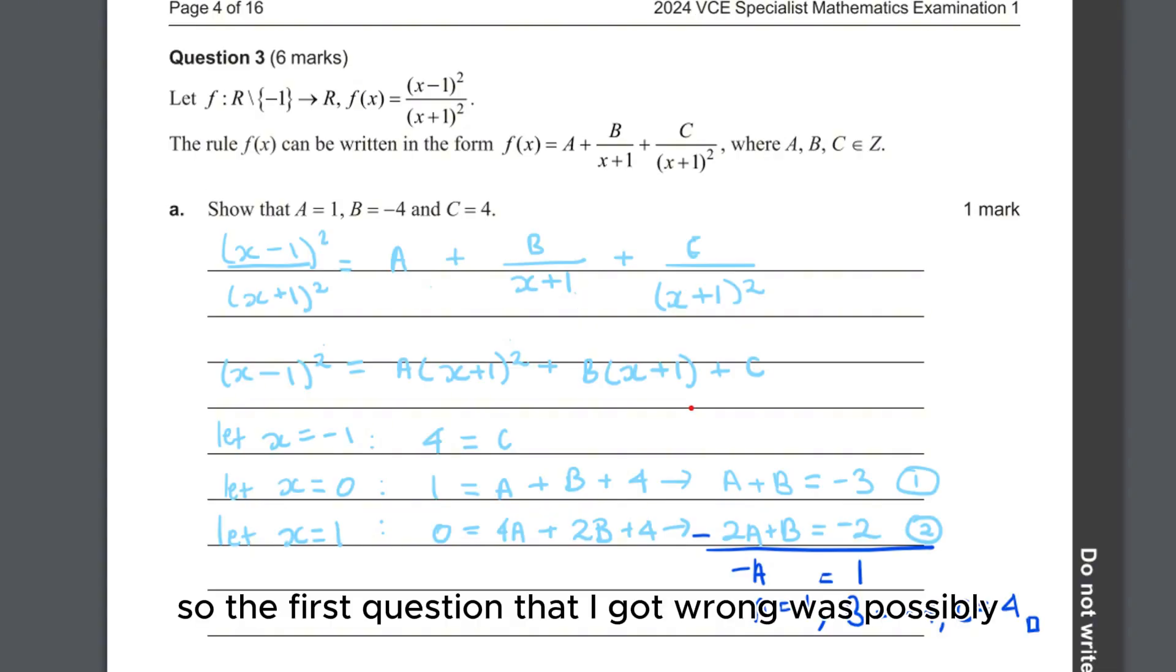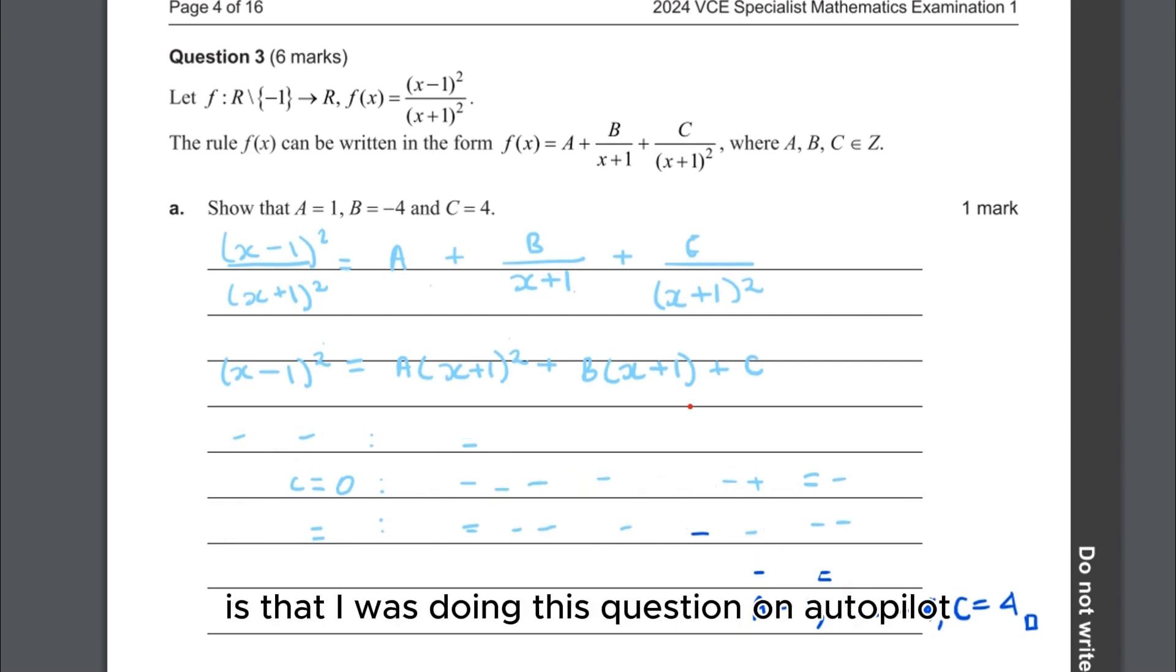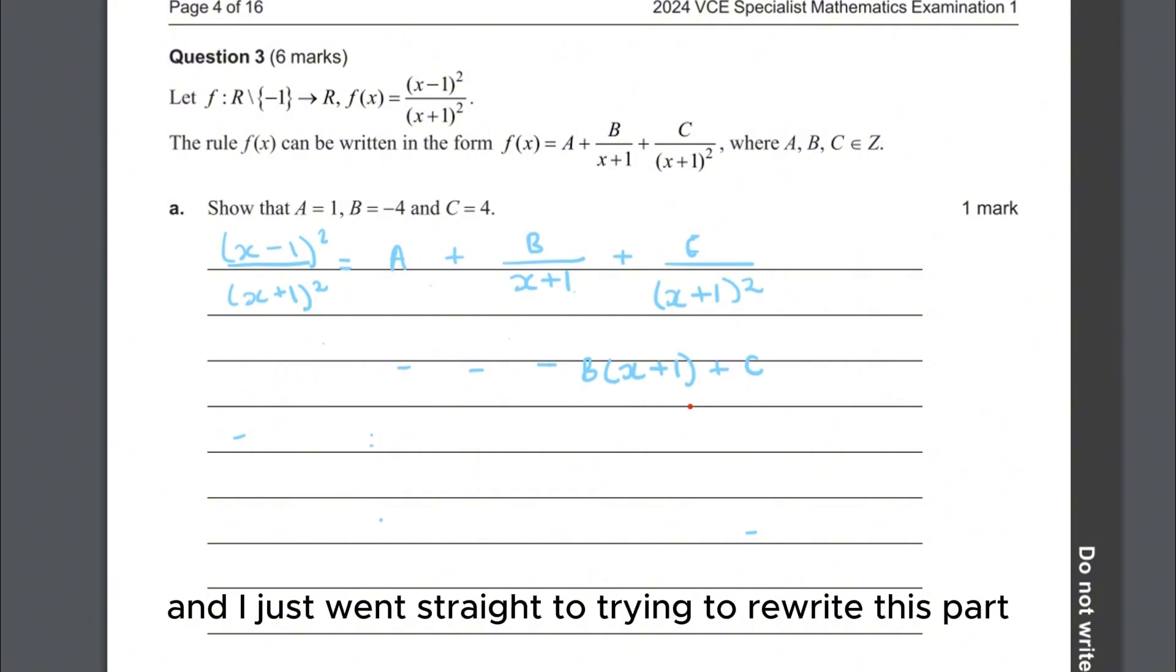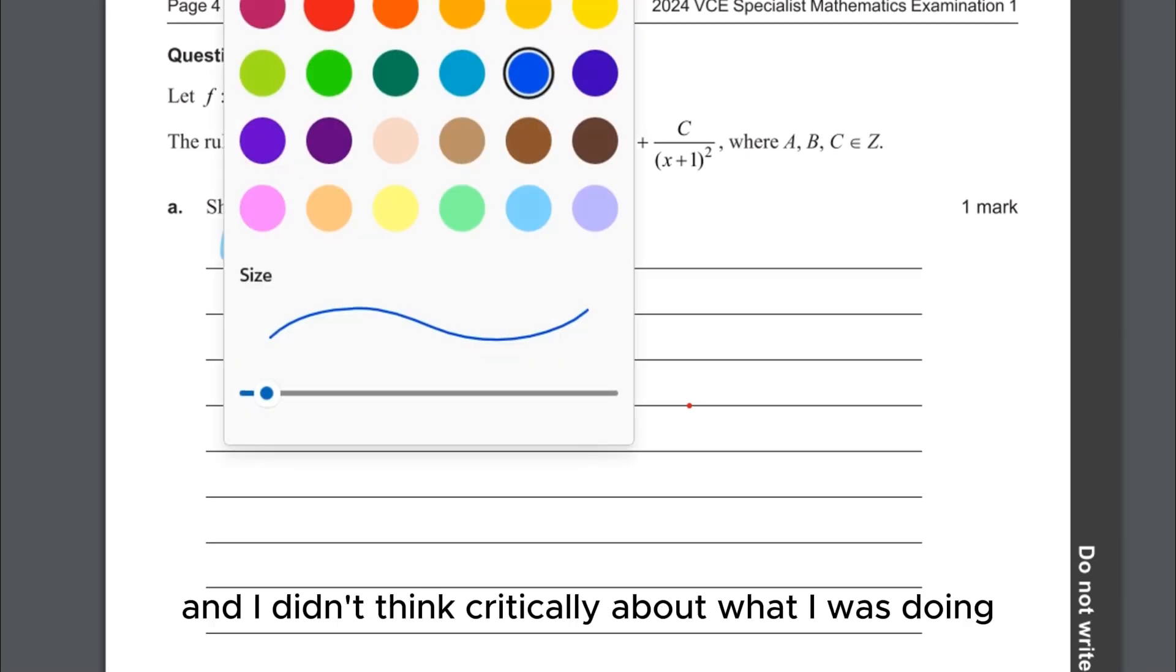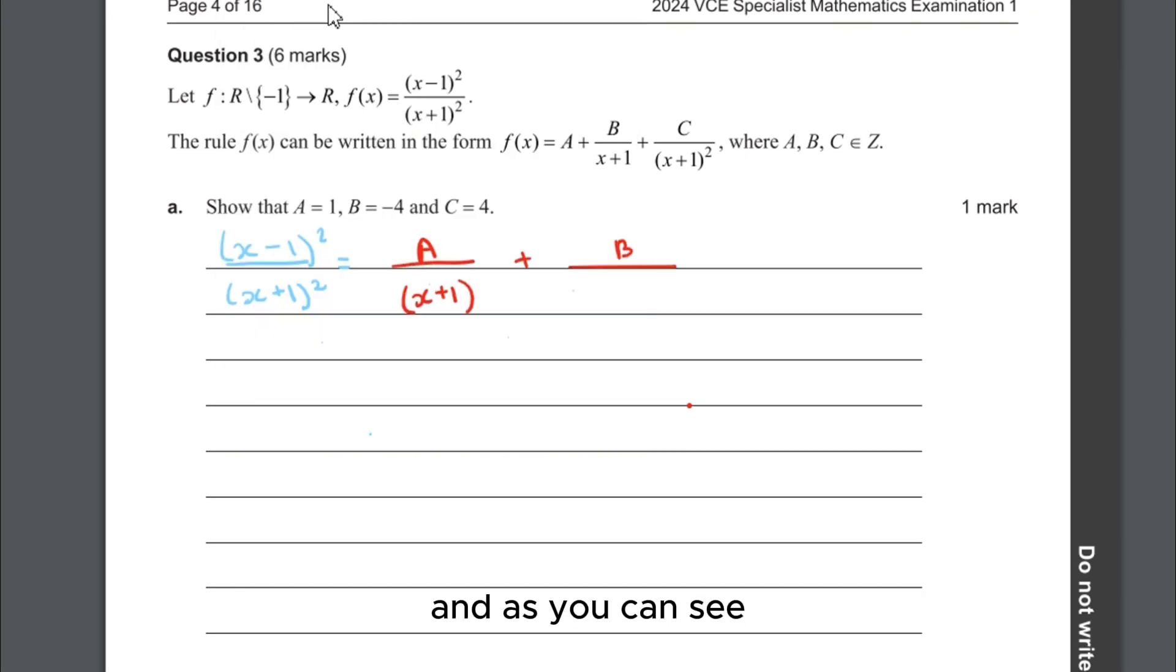The first question that I got wrong was possibly the easiest question in the entire exam because it was a straight show-that question for partial fractions. If I had been doing it using the methods I was taught, this is what I would have done to get the right answer. So what went wrong? I was doing this question on autopilot and I didn't slow down to think about using the form that they gave me.